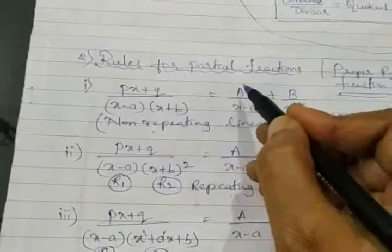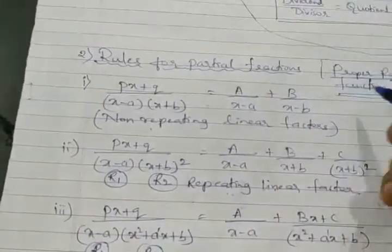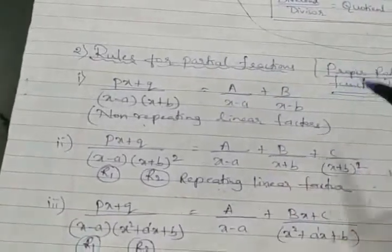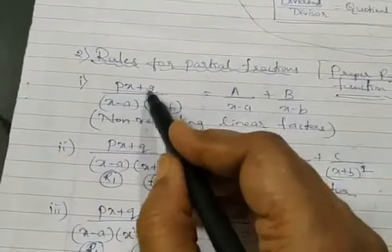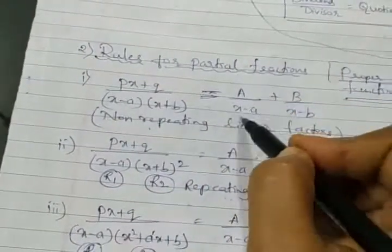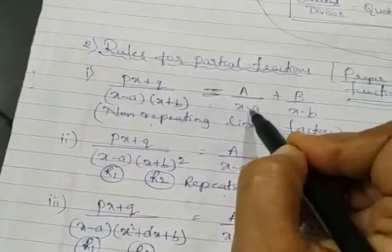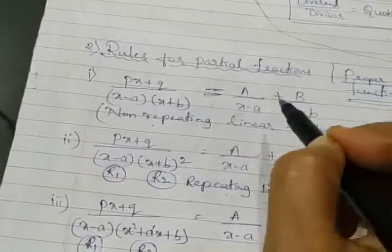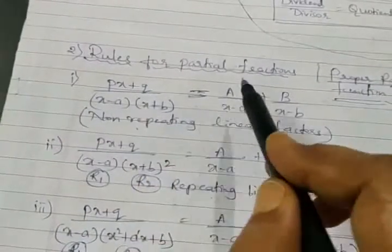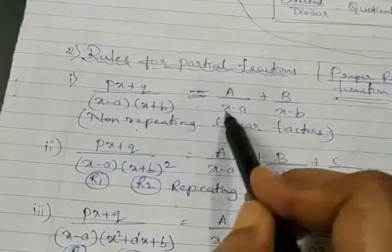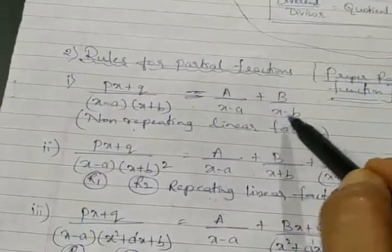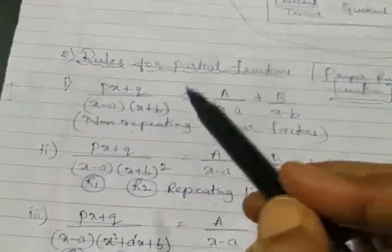Rule number 1 says: for non-repeating linear factors, there exists a constant term A for each factor. So the whole fraction can be expressed as A upon (x minus a) plus B upon (x minus b), and so on - one constant term per non-repeating linear factor. This rule guides you on how to express the fraction as a sum of partial fractions. The solution - finding A and B - is your job to work out.